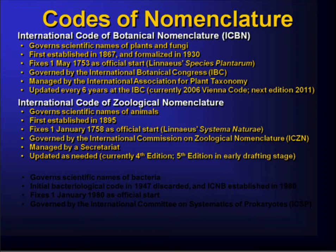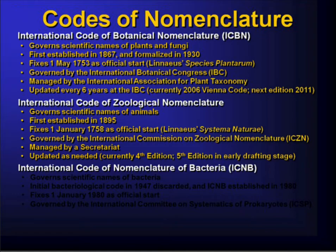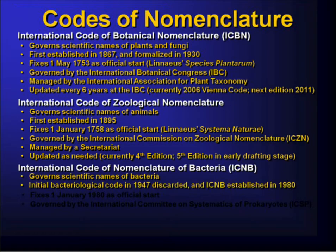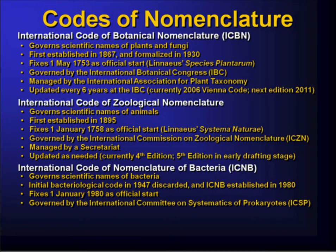The bacteria folks have their code, the International Code of Nomenclature of Bacteria, ICNB. It was originally established in 1947, but was discarded due to inconsistent usage. The current code was established in 1980, fixing 1980 as the starting point for all bacteriological nomenclature — all bacterial names prior to that are essentially treated as not existing. They are governed by a committee and have a single journal through which all new bacterial names are published.